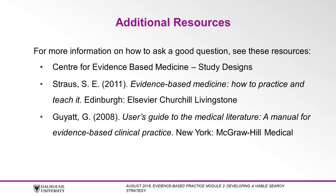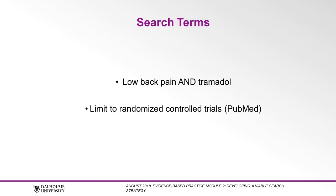For more information on study designs, see the resources listed here — you can also find them in the video description. Here is what the final search approach will look like: we will search for low back pain and combine it with the term tramadol. In this example, we will choose to limit our search to RCTs, which can be done using the article type. This PubMed search will be demonstrated in more detail in Module 3.